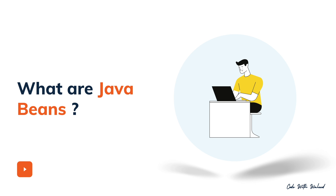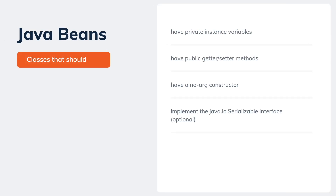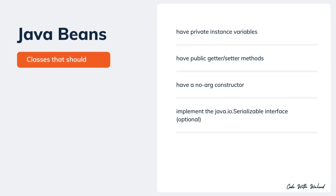A Java bean is like any other class except that it adheres to a convention. These classes should have private instance variables — instance variables in a Java bean should be declared with the keyword private. These classes should also have public getter and setter methods to access these private variables.